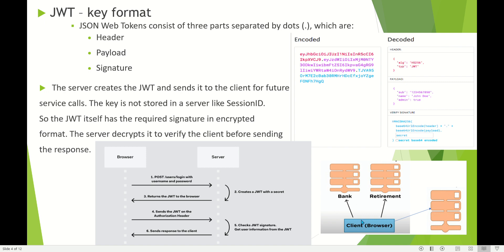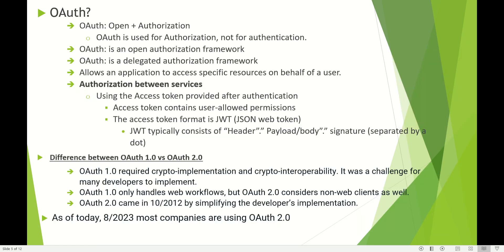Because the JWT is not stored in the server, this JWT can be sent to multiple apps in the same organization, assuming they all use the same encryption and decryption format. For example, bank, retirement, and loan applications — as long as they use the same encryption and decryption format, the browser can connect to different apps using the JWT. That is the reason JWT is widely used.